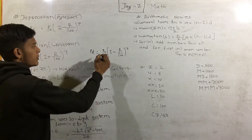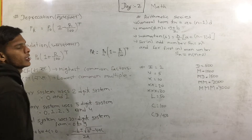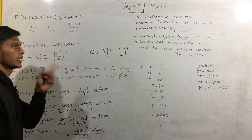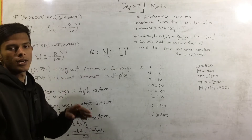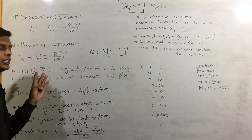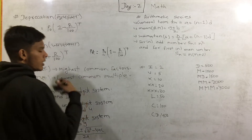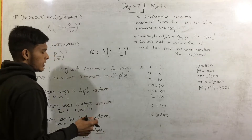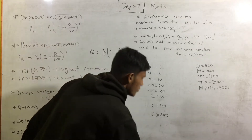The depreciation formula is: P₀ times (1 minus R divided by 100) to the power T, that is P₀(1 - R/100)^T.